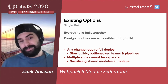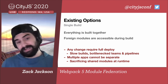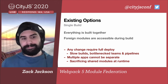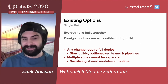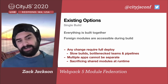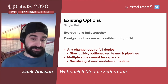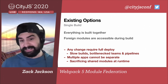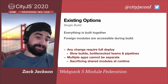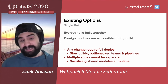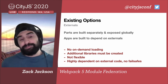There are also performance issues with native ESM — preloading is required, there's high round-trip time, and you make a lot of requests. If we look at a single build — a normal monolith — everything's built together, foreign modules are accessible during the build, but that doesn't help at runtime and would still require a full rebuild for any module you want in the system. Any change requires a full deploy, builds get slower, bottlenecked by teams, build pipelines, and deployment priorities.